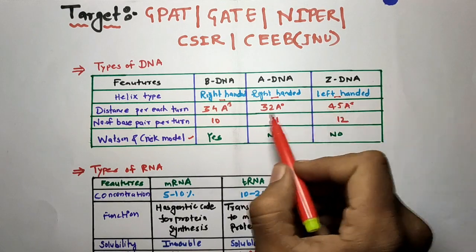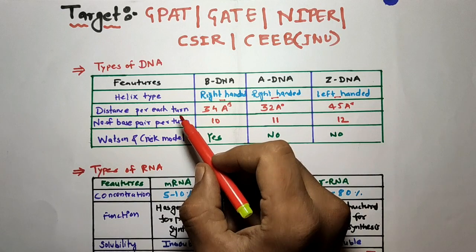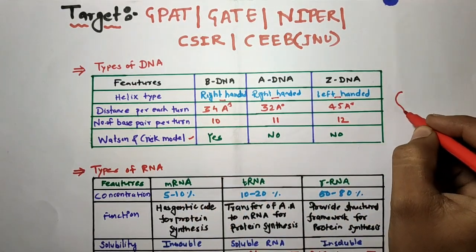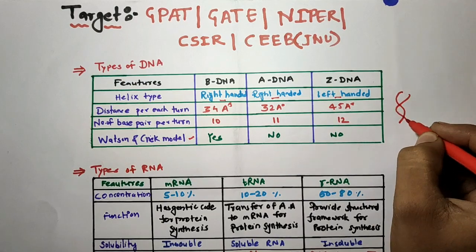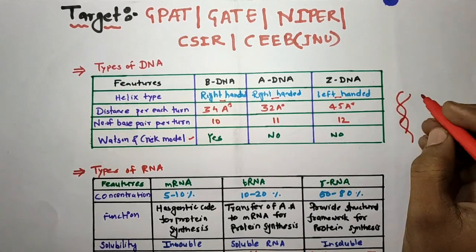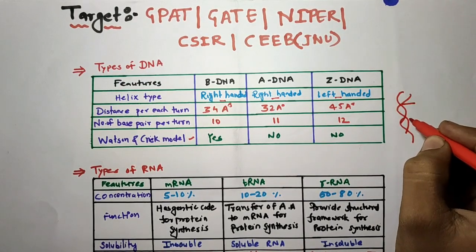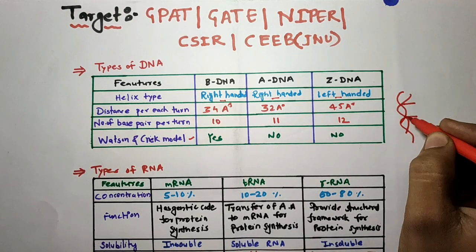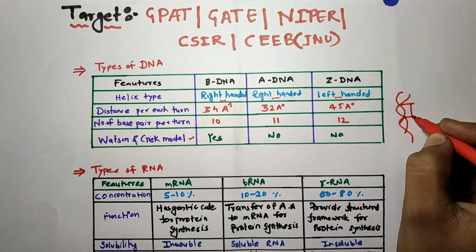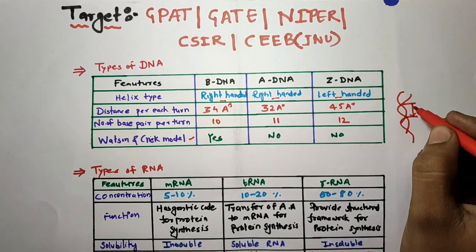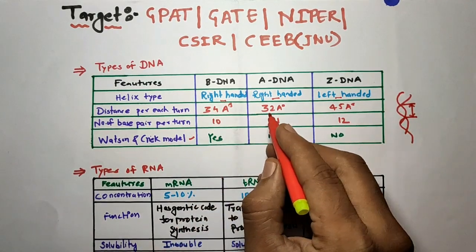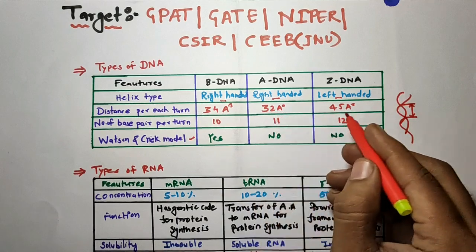Now we will see the distance per each turn. The DNA is a double helix — this is the first turn and this is the second turn. The distance between two turns is the distance per turn. For B-DNA it is 34 angstroms, for A-DNA it is 32 angstroms, and for Z-DNA it is 45 angstroms.